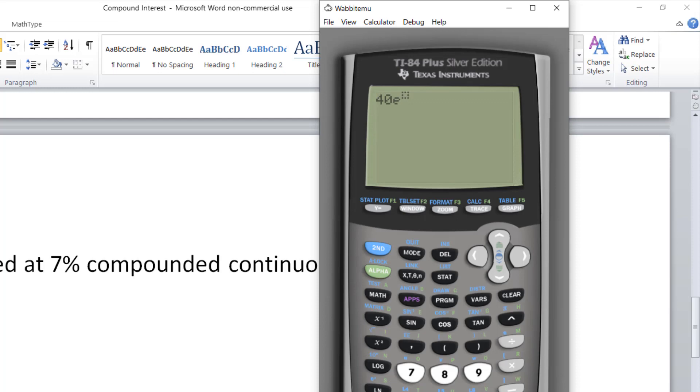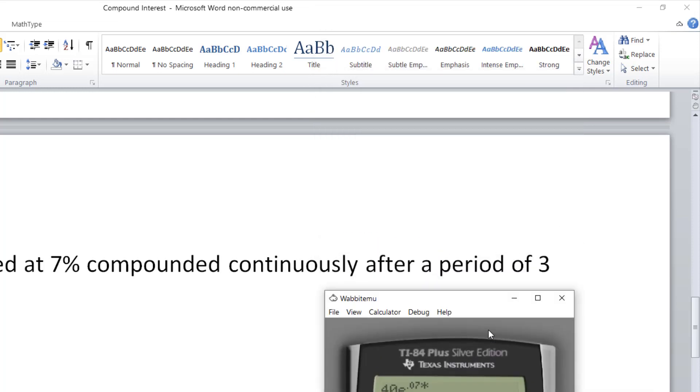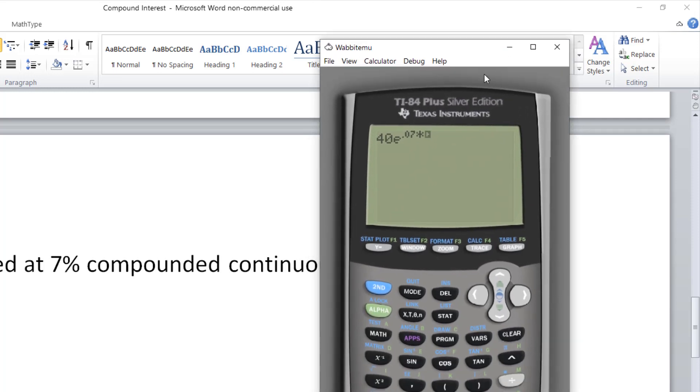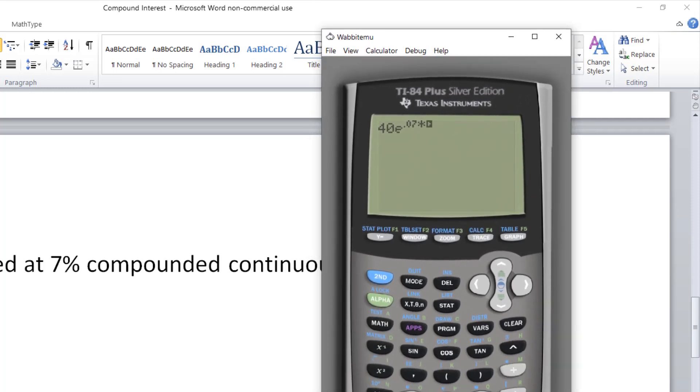The exponent is going to be 0.07 times, and it's for three years. Hit enter.